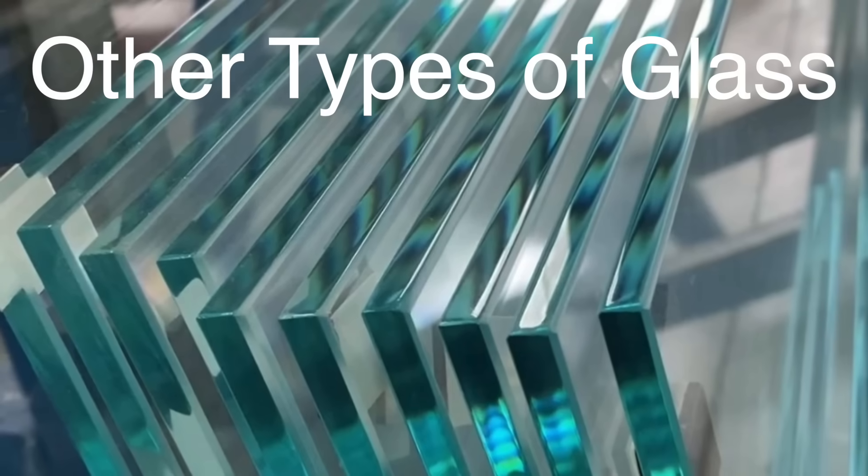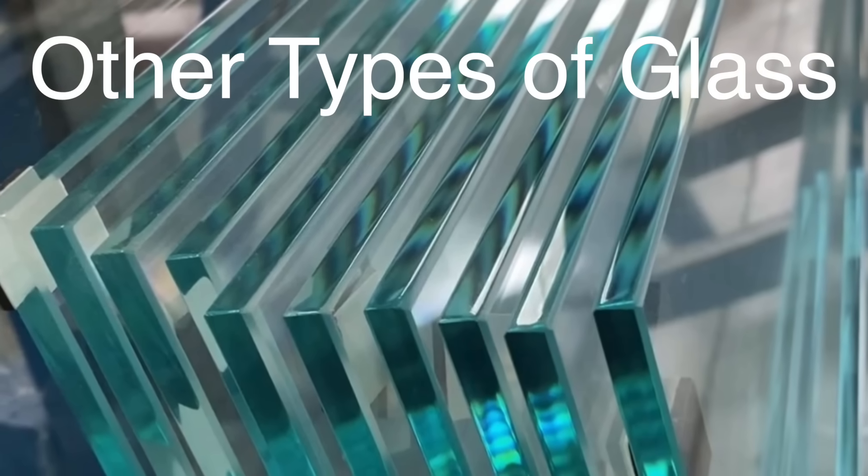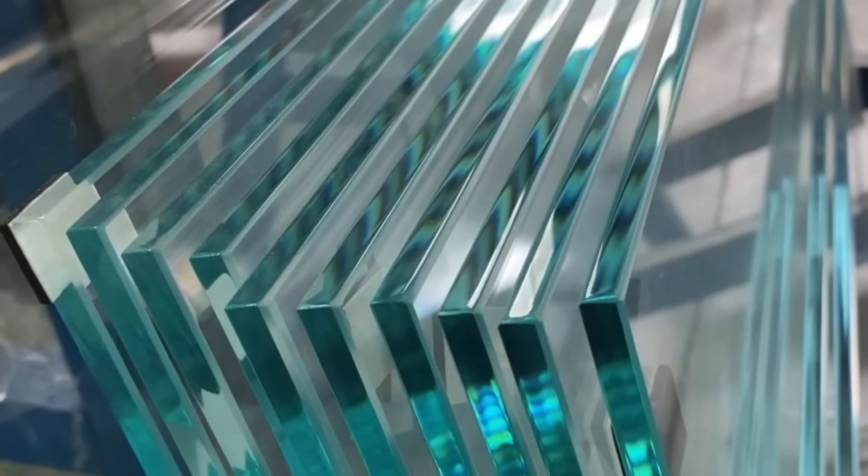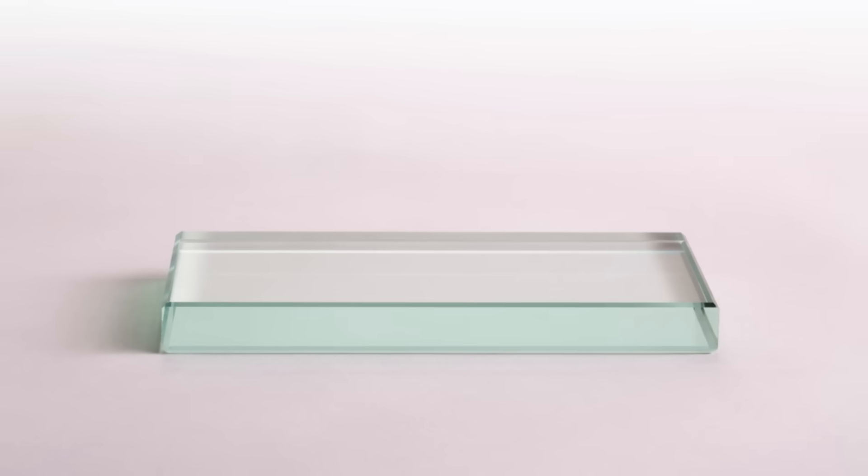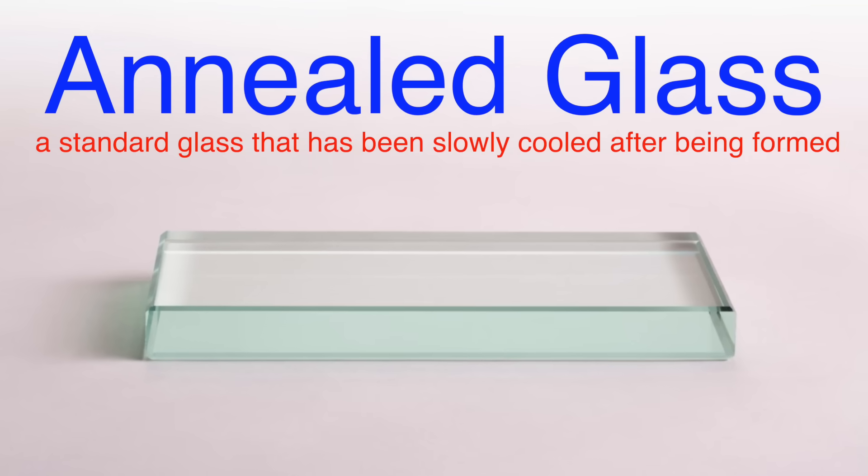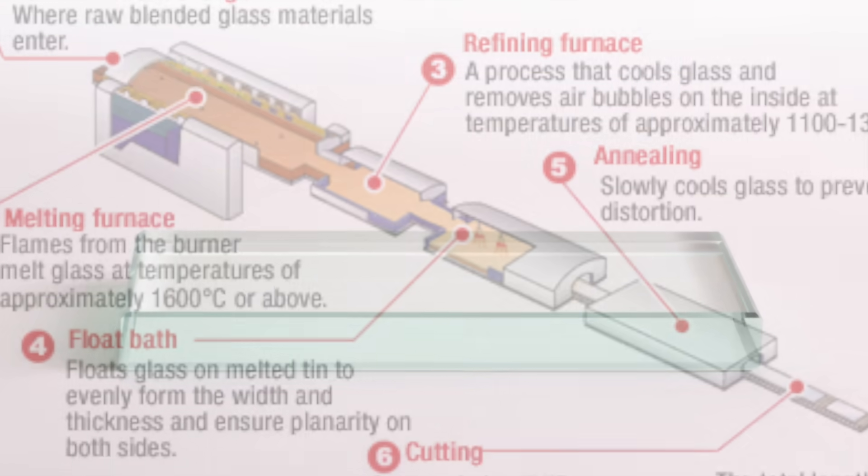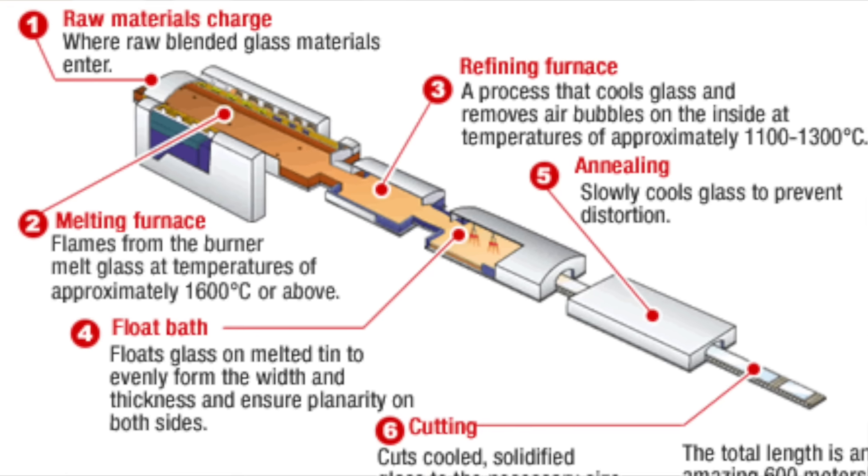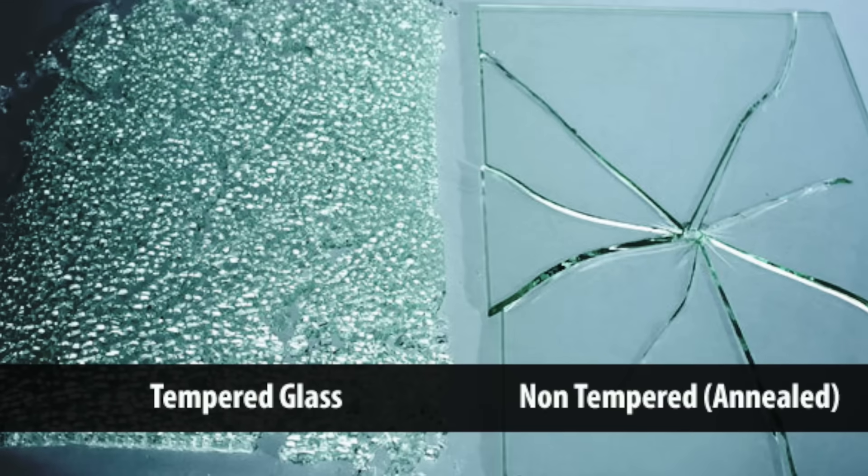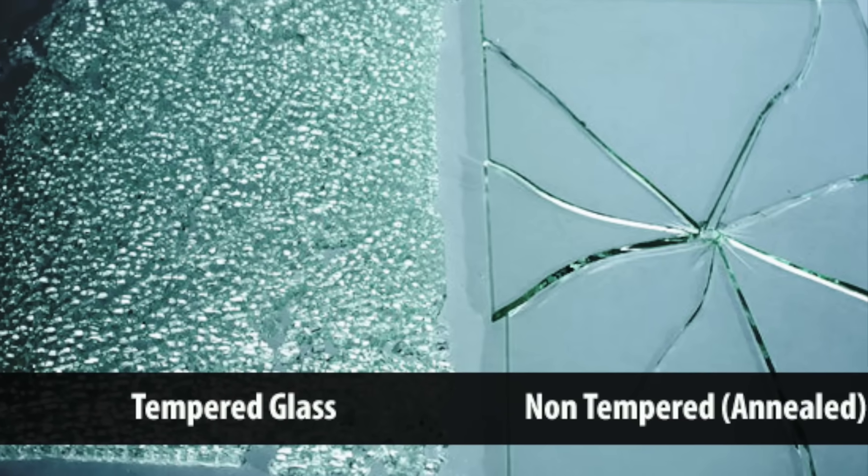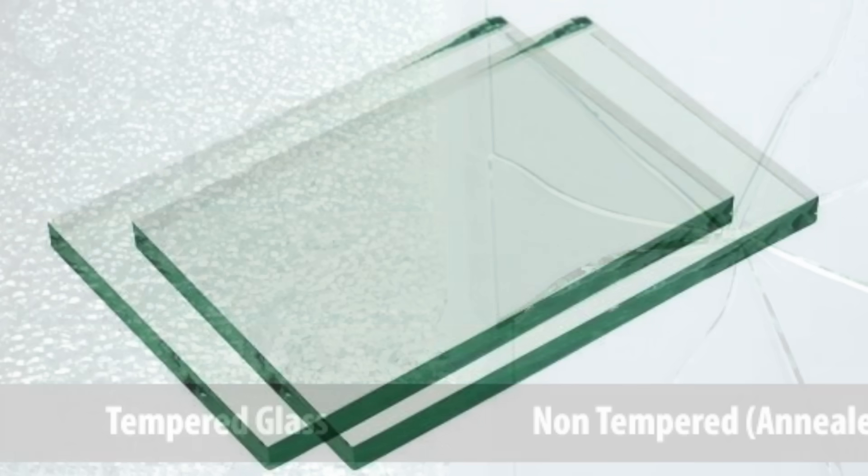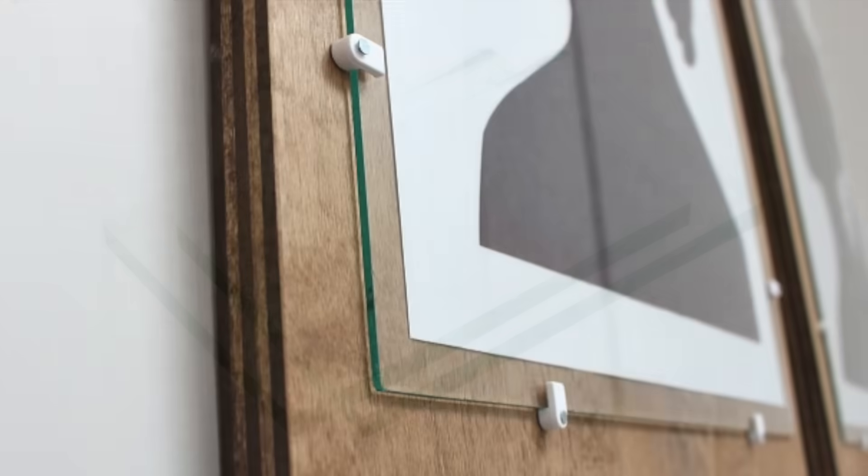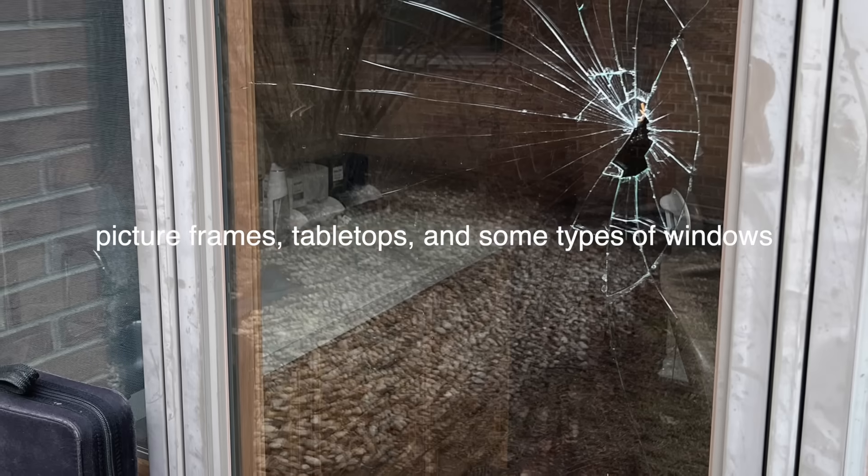However, tempered glass is not the only type available, and it's important to understand the differences to choose the right material for a given application. Another common type is annealed glass, which is standard glass that has been slowly cooled after being formed. Unlike tempered glass, annealed glass does not undergo additional treatment to increase its strength. As a result, it is less durable and more prone to breaking into sharp, dangerous shards. Annealed glass is typically used where safety is not a primary concern, such as in picture frames, tabletops, and some windows.